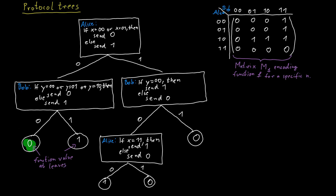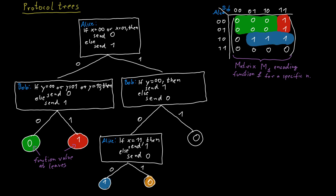Going back to our example, you can see a depiction of this — a partition of our matrix into monochromatic combinatorial rectangles and the mapping between those rectangles and the leaves of the communication protocol. This should increase our understanding of what these protocols really do and how we should think about them, and hopefully we can use this to get new results.